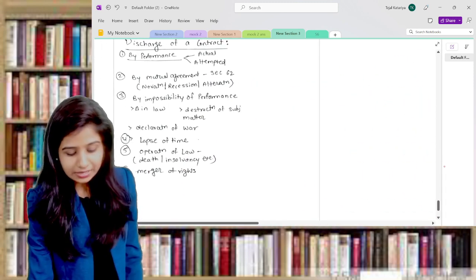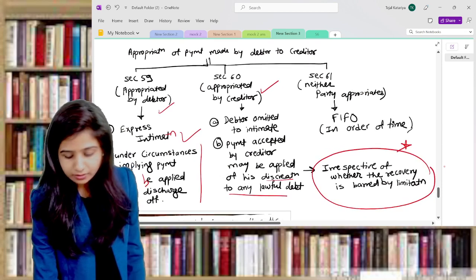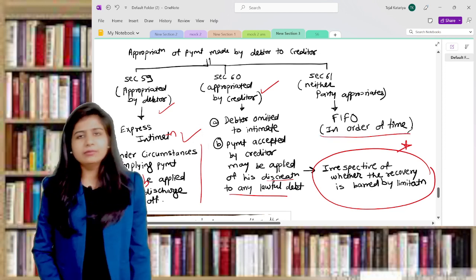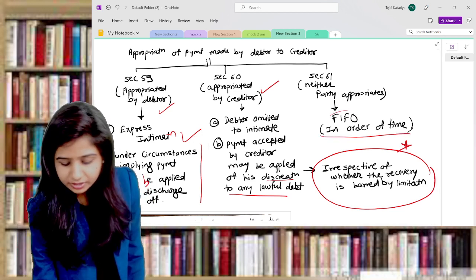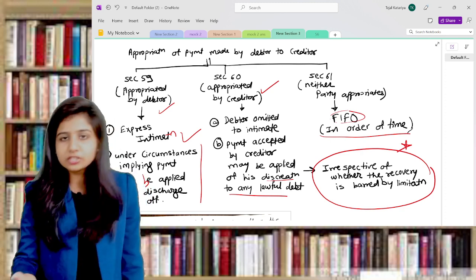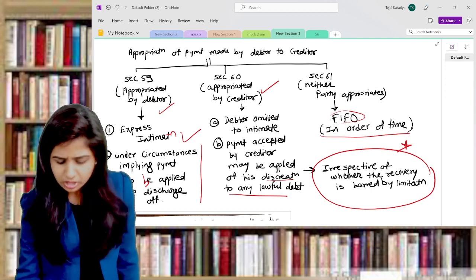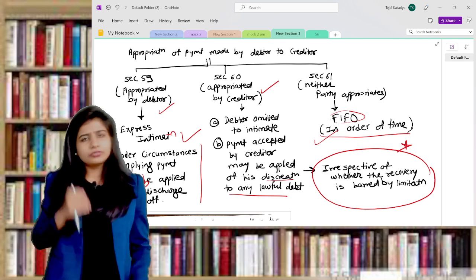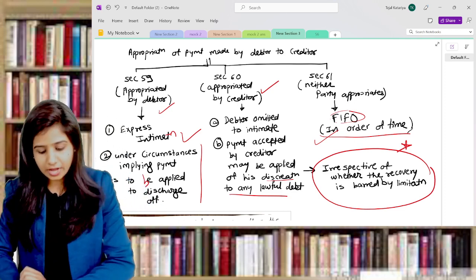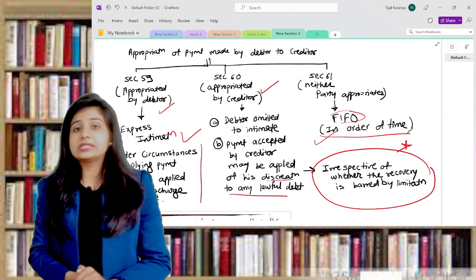And the last section is section number 61 which talks about neither party appropriates. Then it's always in the order of time. For your understanding I have written as a FIFO method because you understand FIFO. But otherwise, if debtor is not giving any intimation and creditor is also not applying his discretion, then in order of time, FIFO - that is first in first out - accordingly FIFO method or in order of time or in proportion, you can apply that payment. This is given under section number 61.